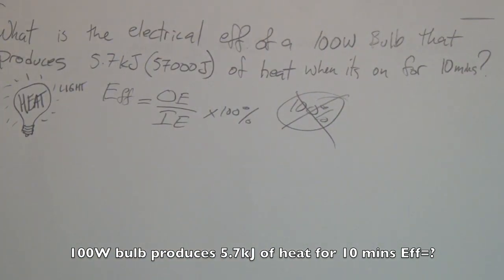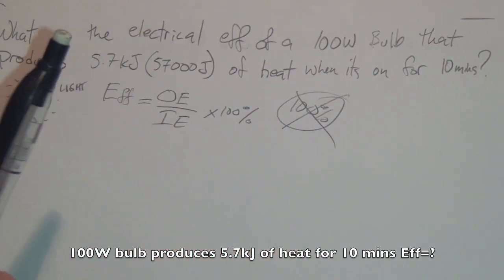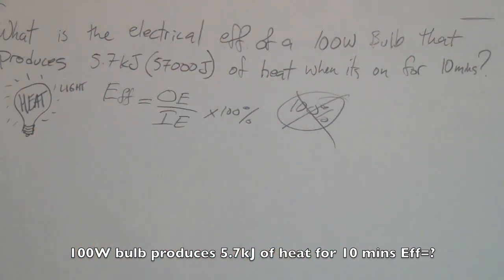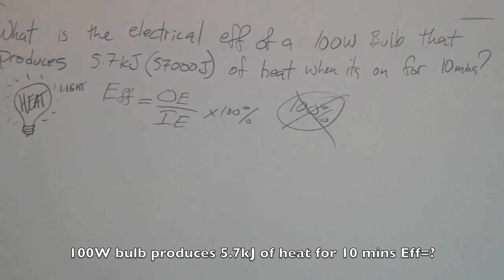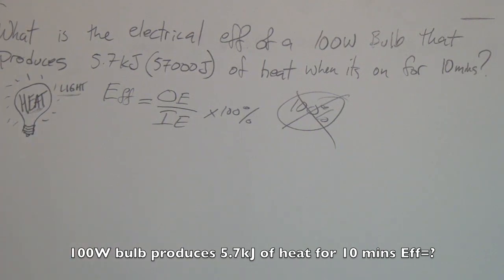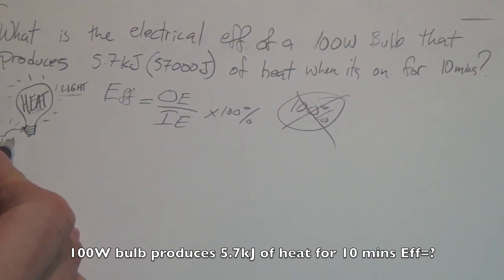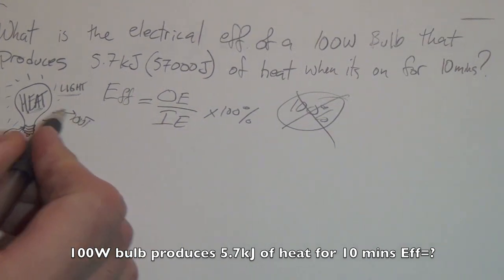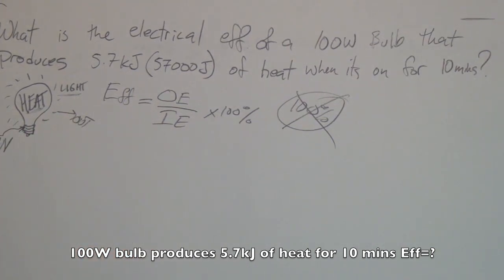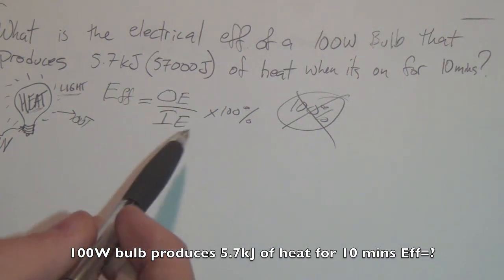Let's paint the picture. What is the electrical efficiency of a 100 watt light bulb that produces 57,000 joules of heat when it's on for 10 minutes? We have this light bulb that's on — some of the energy goes to light, some of the energy goes into heat. Energy will be going into this light bulb, so we have to figure out how much is going in and what is going out. That, in there, lies the confusion: which energy is the output and which energy is the input?